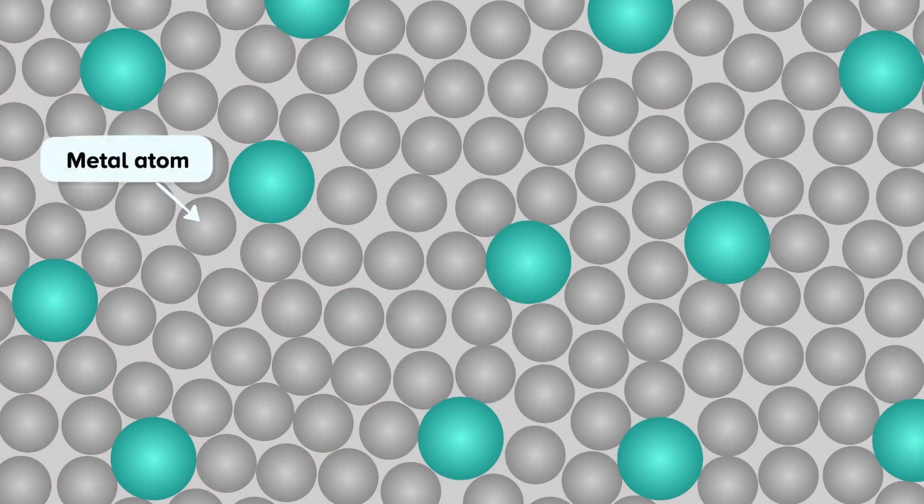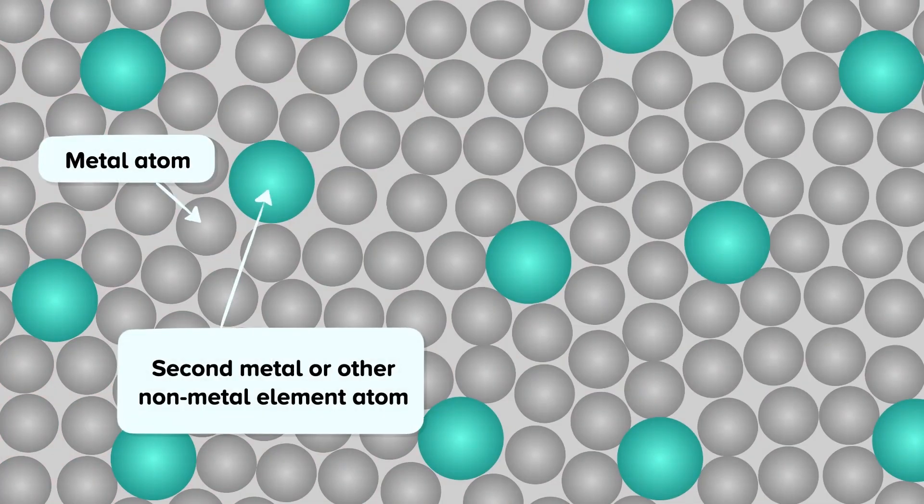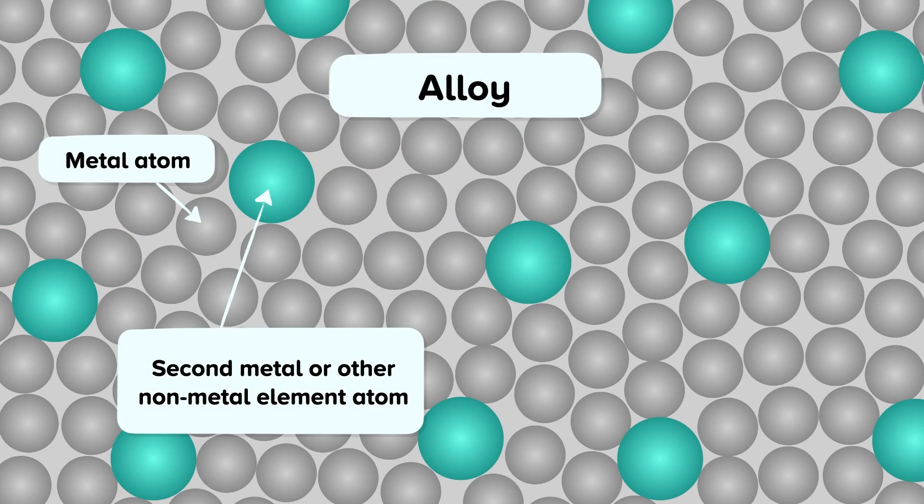When a metal is mixed with another metal or another non-metal element, this is called an alloy. An alloy is an example of a mixture. Adding a second element introduces atoms of a different shape, disrupting the arrangement of the atoms.